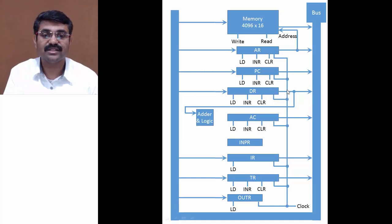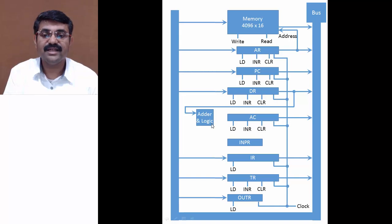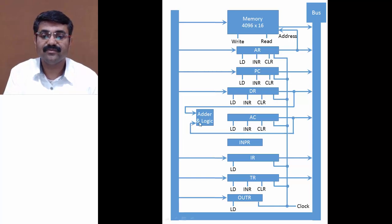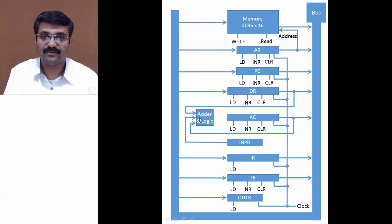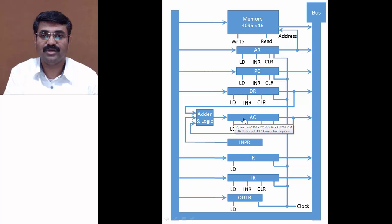The second input to the adder and logic unit comes from the accumulator itself — the output of the accumulator is given to the bus as well as to the adder and logic unit. The third input to the adder and logic unit comes from INPR — so the output of INPR is also given to this adder and logic unit.